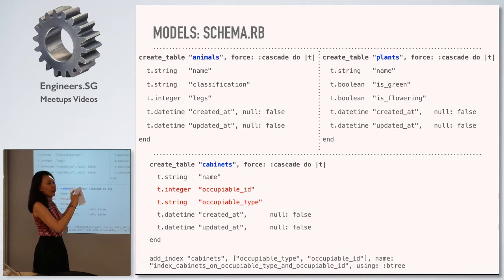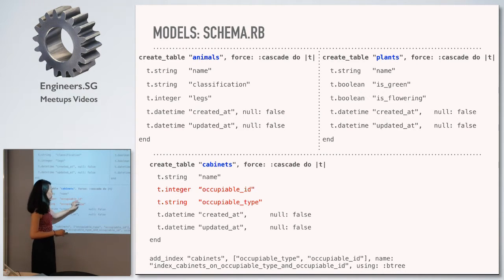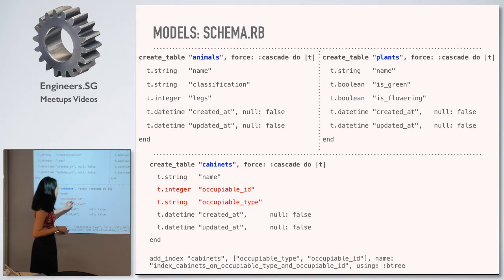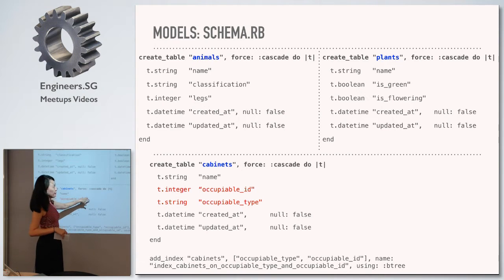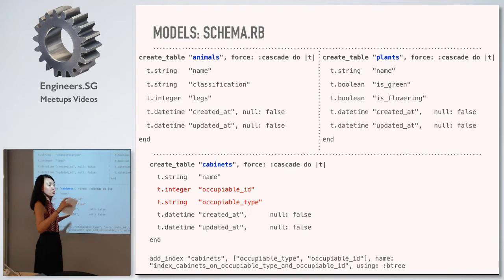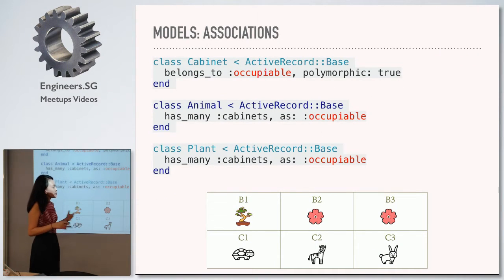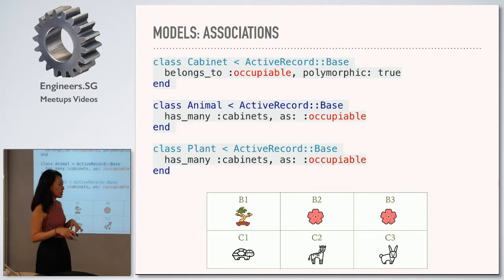When two models have very different attributes, you don't put them together and associate them with cabinets. The `occupiable_type` is a string — capital A Animal, or capital P Plant. So when you set that attribute to say Plant, it will look for a plant with the `occupiable_id`, say one — so the first plant. A cabinet can be linked to two different models. The association looks like this: cabinet `belongs_to :occupiable, polymorphic: true`. And then an animal `has_many :cabinets, as: :occupiable`, and it goes back to the cabinet.